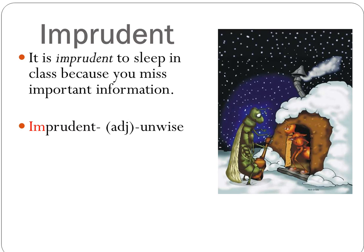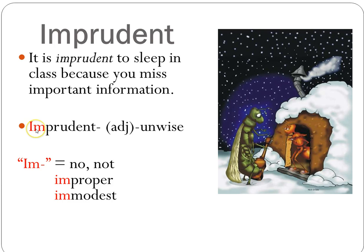Imprudent means unwise, and the prefix IM means no or not. If I took off the IM and just had prudent, it would mean wise. So prudent means wise, and imprudent means unwise or not smart. Examples of other words that use this prefix: improper — if you have improper attire, you're not in dress code. Improper attire is often immodest, meaning not modest, meaning it is not covering up as much as it should be. Don't forget to write down the prefix as well as the word with the part of speech and definition.